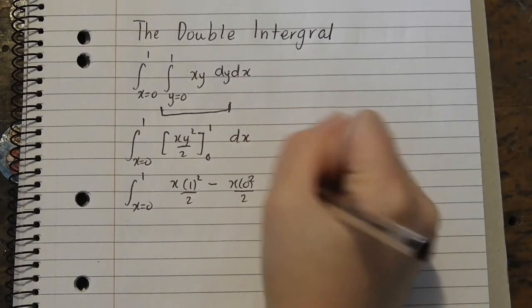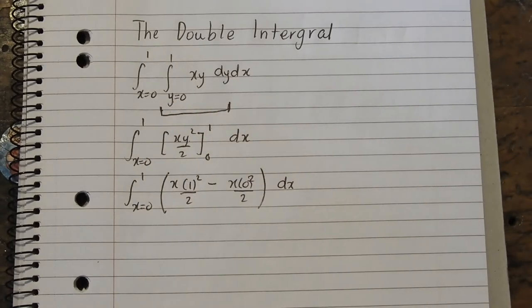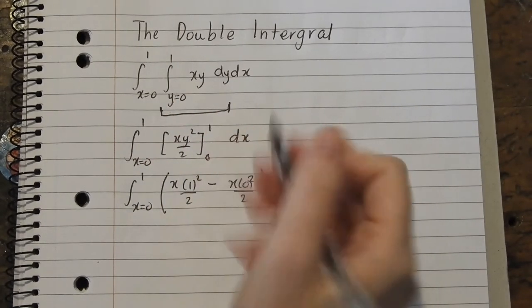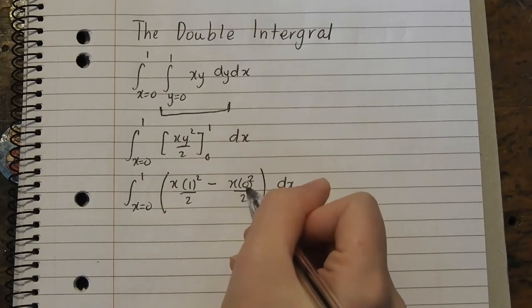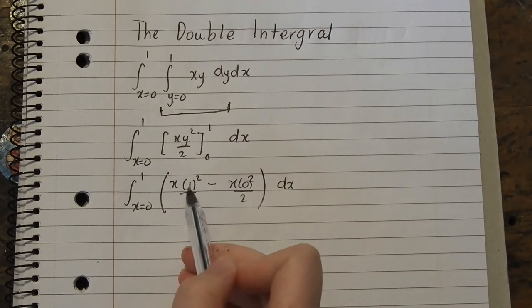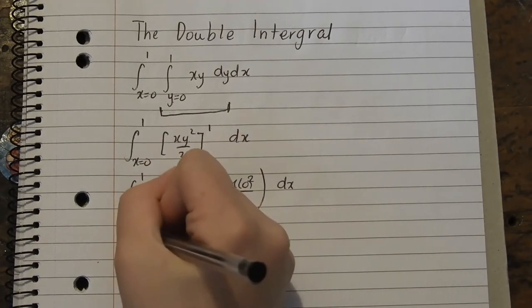And we still got the dx and it's got the brackets around. Okay, so what's this? This is 0 because it's been times by 0 and this is 1, so it's just x on 2.